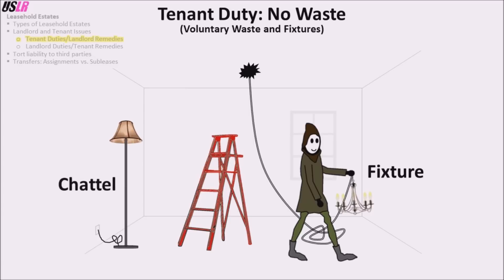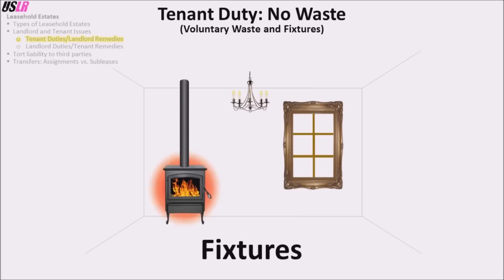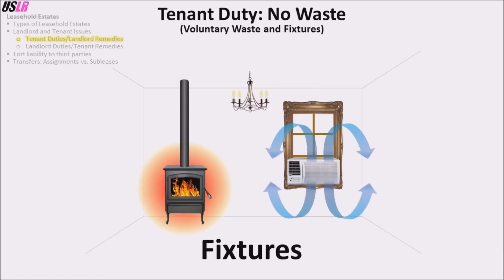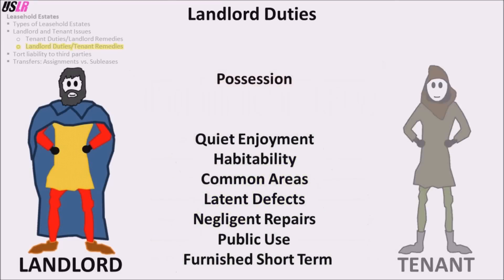Something not attached to real property is called a chattel. However, if a tenant installs a fixture, today's courts allow the tenant to remove it if the removal does not cause substantial harm to the property. Some examples of fixtures are custom lighting, custom windows, heating systems, and cooling systems. Note that the landlord and tenant can alter the duty not to commit waste in the lease by agreeing to their own terms for fixtures.